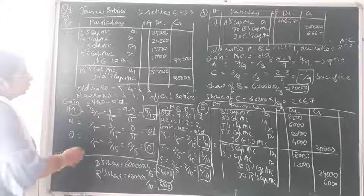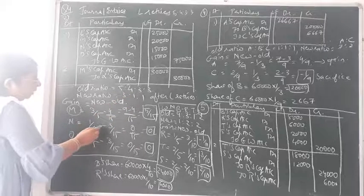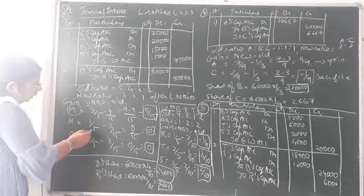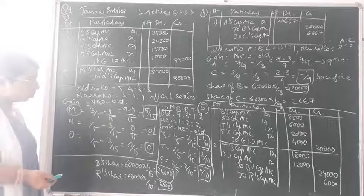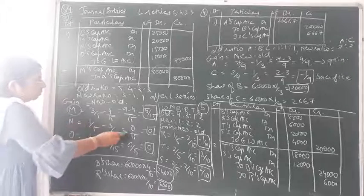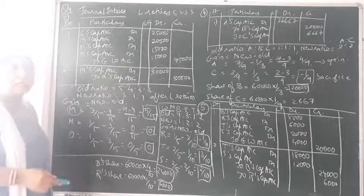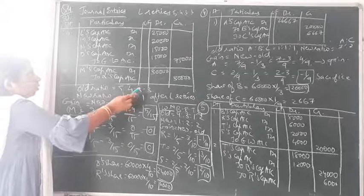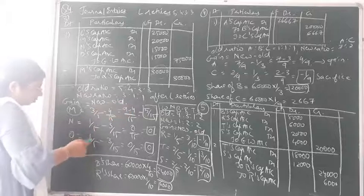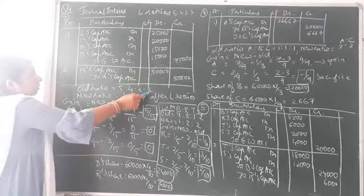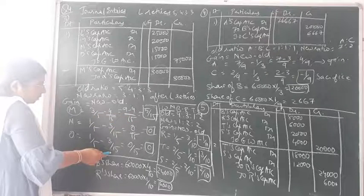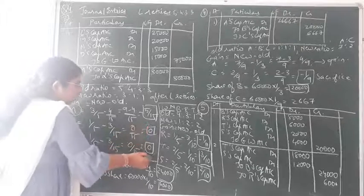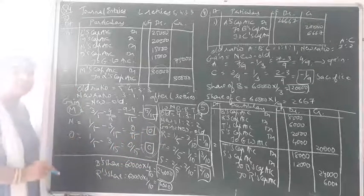For N: new ratio 1/5 minus old share 3/15. Taking LCM as 15: 3/15 minus 3/15 = 0/15. So no sacrifice and no gain in the case of N. For O: new ratio is also 1/5 minus old share 3/15. Again the same result — 0/15. So no gain and no sacrifice in the case of both N and O.